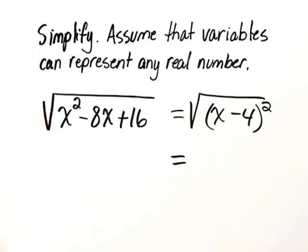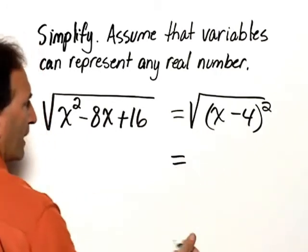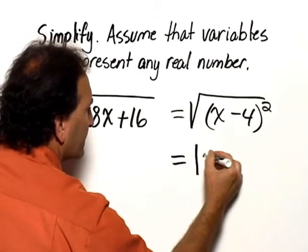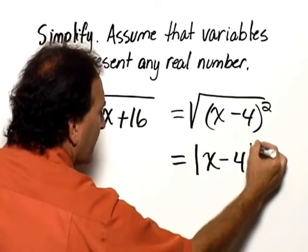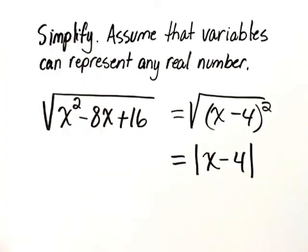Therefore, when we take the square root of x minus 4 quantity squared, we say that it's equal to the absolute value of x minus 4. And that's our answer.